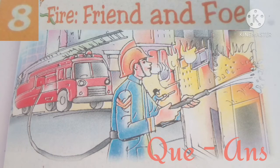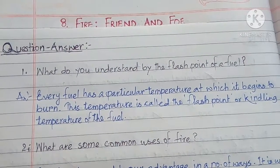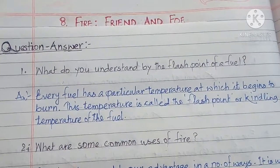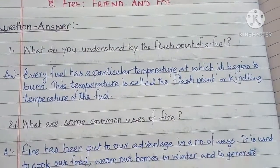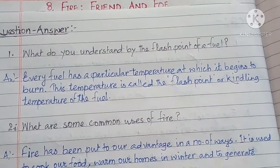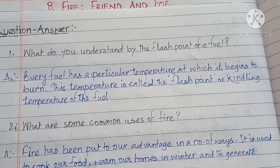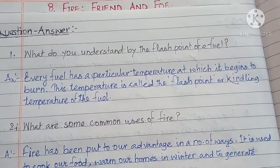Hello and welcome back to Ace Chapter 8, Fire, Friend and Foe. I'm going to present questions and answers to you. Question number one: What do you understand by the flashpoint of a fuel? Answer: Every fuel has a particular temperature at which it begins to burn. This temperature is called the flashpoint or kindling temperature of the fuel.